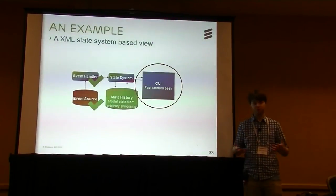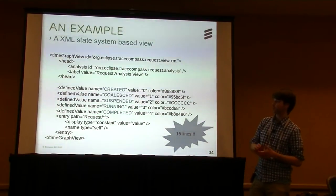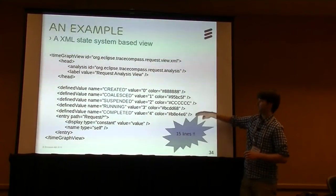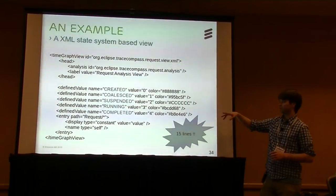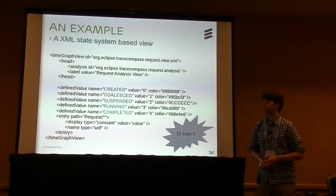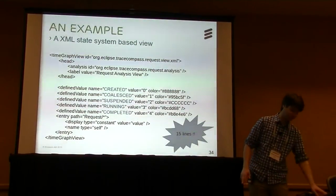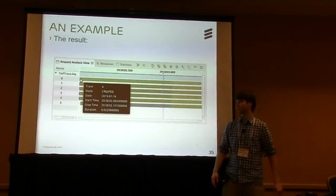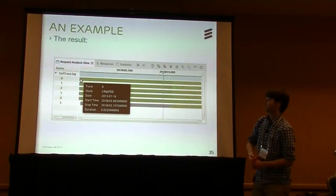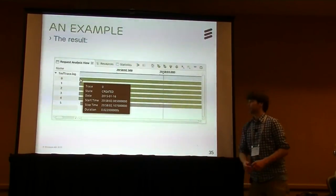We have the event source and state provider done without writing Java code. The only thing missing is a way to view the data. With a little XML — just 15 lines — we define a complete view. We say we want a time graph view, give it a name, and map colors to state names: created in one color, completed in another. Then we tell it to find those values in the state system tree. The result shows six different requests and their states over time. You can see where a request was created and eventually completed, and you get all the navigation buttons for free.